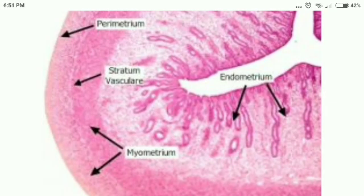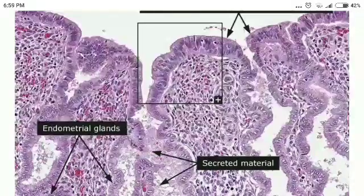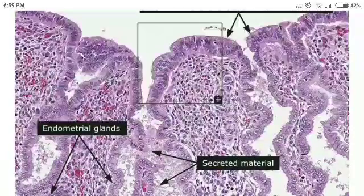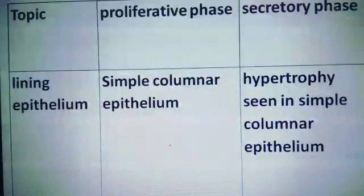This image shows the endometrium with elongated glands, indicating the proliferative stage. Here you can see the uterine glands are coiled and secretion is present within the gland, indicating the secretory phase.